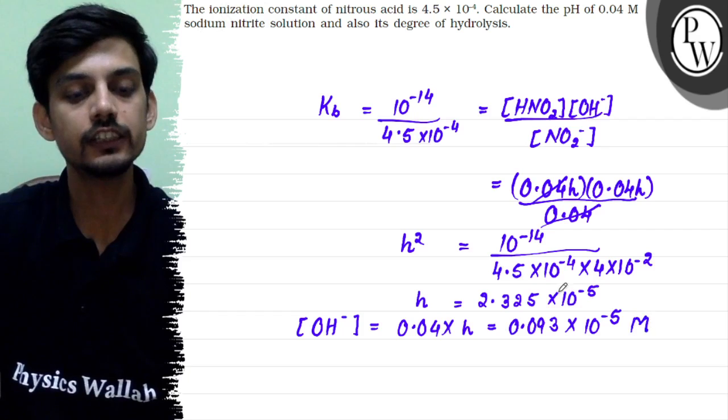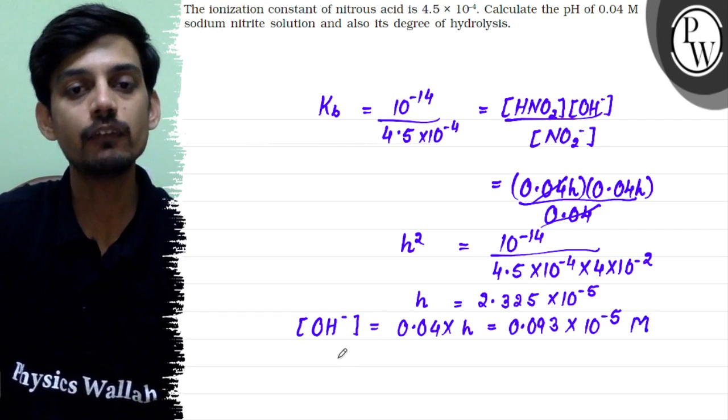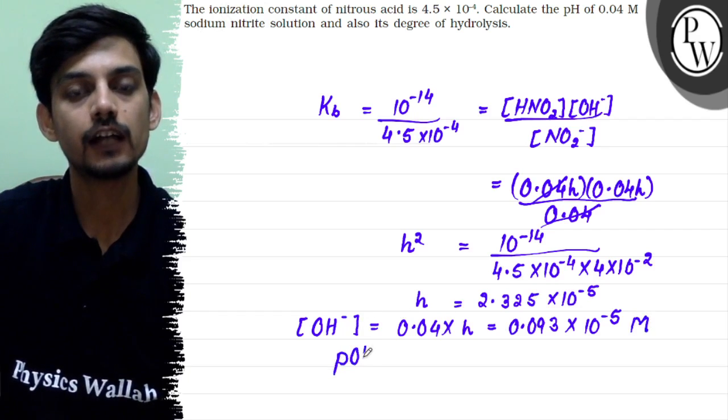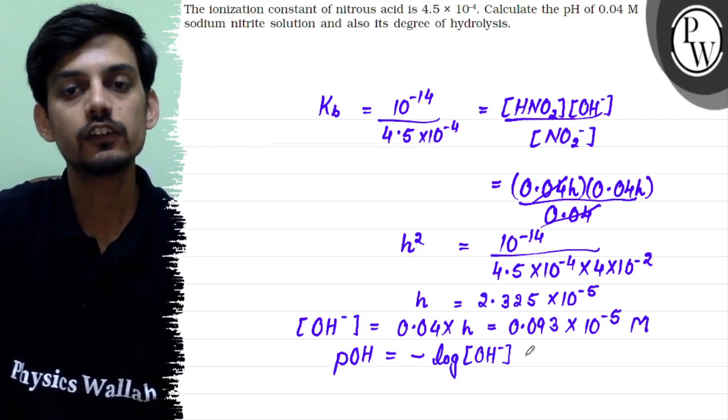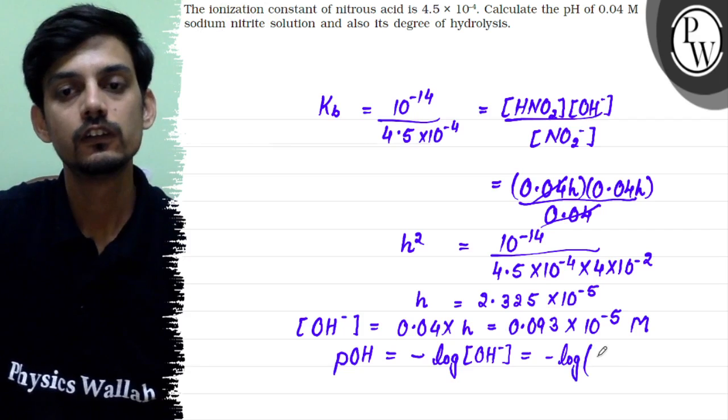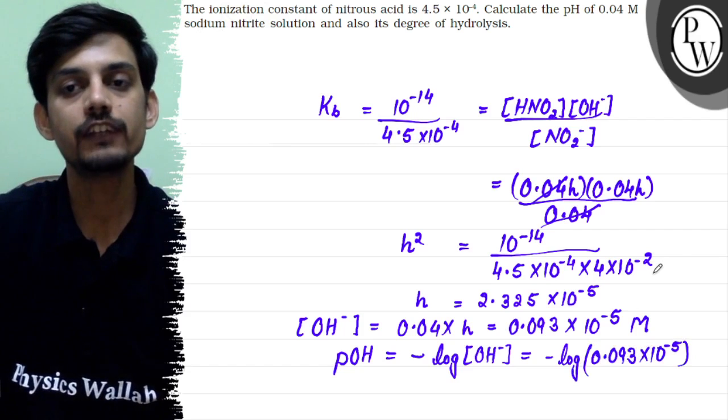And using the concentration of OH we can calculate pOH. If we have OH- concentration, pOH is -log of OH ion concentration. So this pOH will be -log of 0.093 × 10^-5. So from here we can find the value of pH.